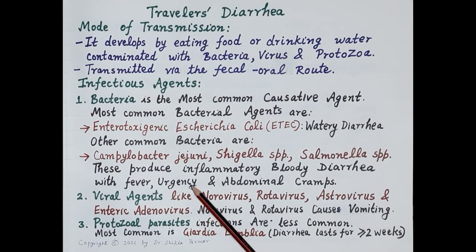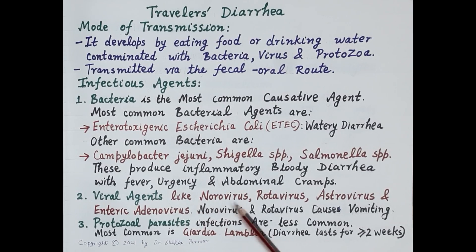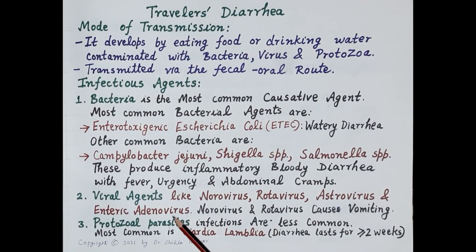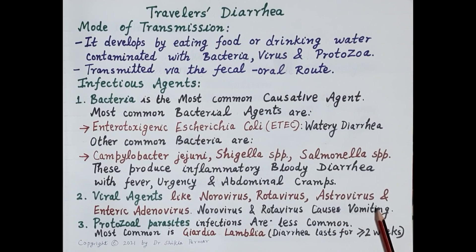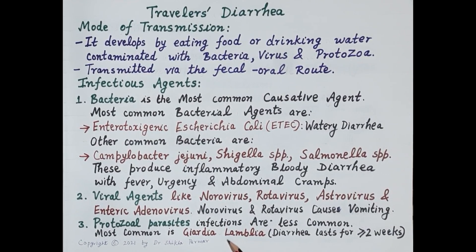With inflammatory bacterial infections, blood and mucus are seen in the stools, so bloody diarrhea is seen with fever, urgency, and abdominal cramps. Viral agents include norovirus, rotavirus, astrovirus, and enteric adenovirus — norovirus and rotavirus cause vomiting. Protozoal parasitic infections are less common; the most common protozoa causing travelers' diarrhea is Giardia lamblia, where diarrhea persists for two weeks or more.